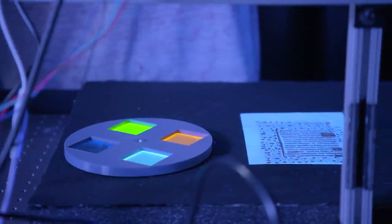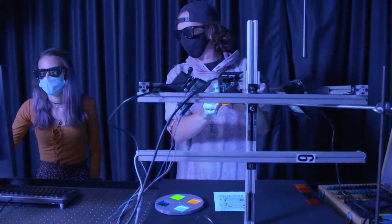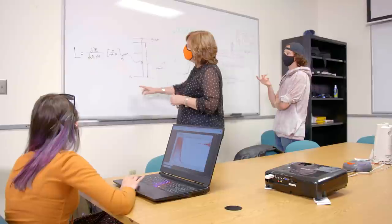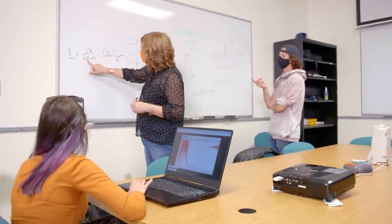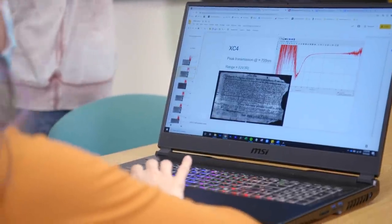The freshman imaging project is an opportunity for first-year imaging science and motion picture science students to get hands-on real-world work experience. Our class was tasked to build a UV multispectral imaging system to read hidden text on documents.